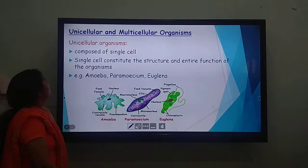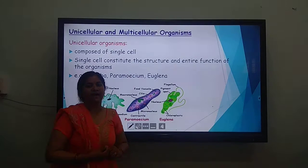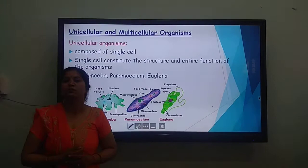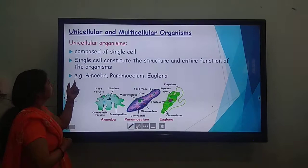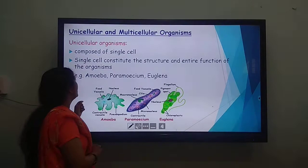Now, unicellular and multicellular organisms. Based on the number of cells an organism has, organisms are divided into two types: unicellular, if they consist of only a single cell, and multicellular. In unicellular organisms, a single cell constitutes the entire structure and function of the organism.